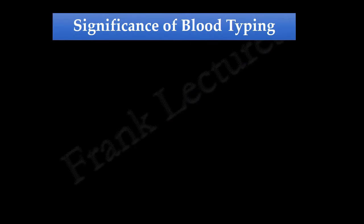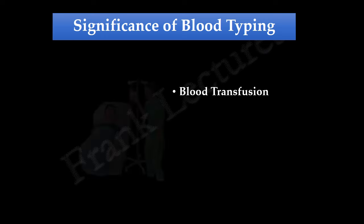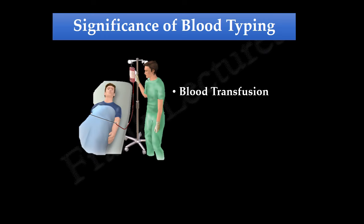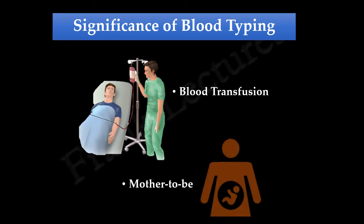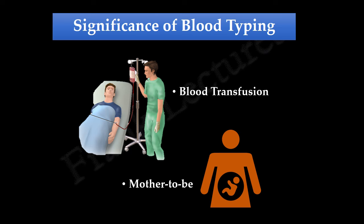Blood typing is used to determine the blood group of donor and recipient prior to transfusion. Also, it is used to determine the blood group of a mother-to-be. Why blood typing in these cases is important, what are the consequences of non-compatible blood transfusion — all these questions will be answered in the next video lecture.